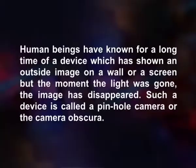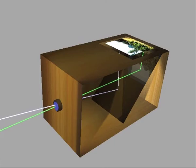The camera along with the film made photography a reality. Human beings have known for a long time of a device which has shown an outside image on a wall or a screen, but the moment the light was gone, the image disappeared. Such a device is called a pinhole camera or the camera obscura. Photography became a reality in the 1840s. During this time, images were recorded on film that used particles of silver salts embedded in a physical substrate such as acetate or gelatin.